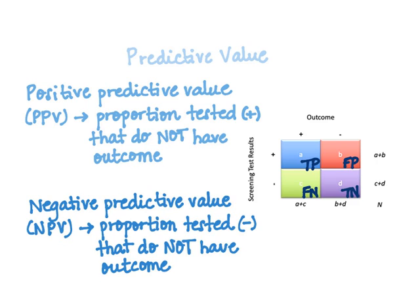With this in mind we can derive the formulas for both predictive values. The positive predictive value equals A (true positives) divided by the total of that row, A plus B — people who screened positive. The negative predictive value equals D (true negatives) divided by the total of that row, C plus D — the total of people who tested negative.